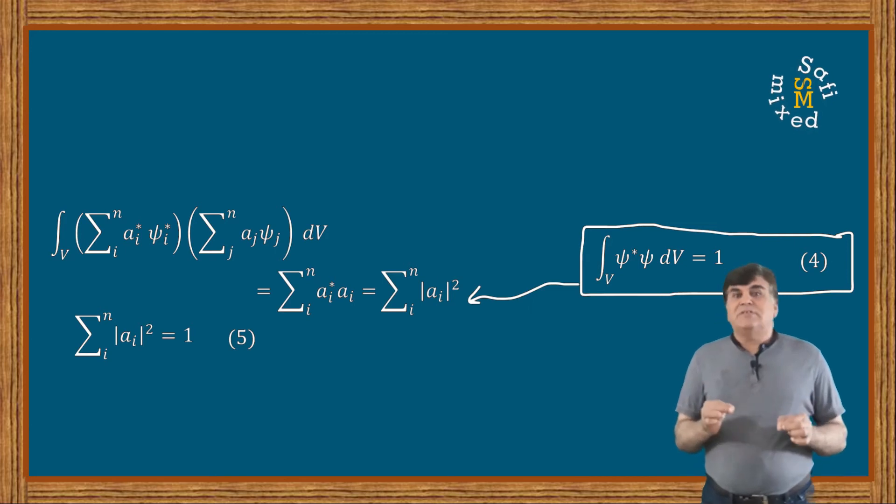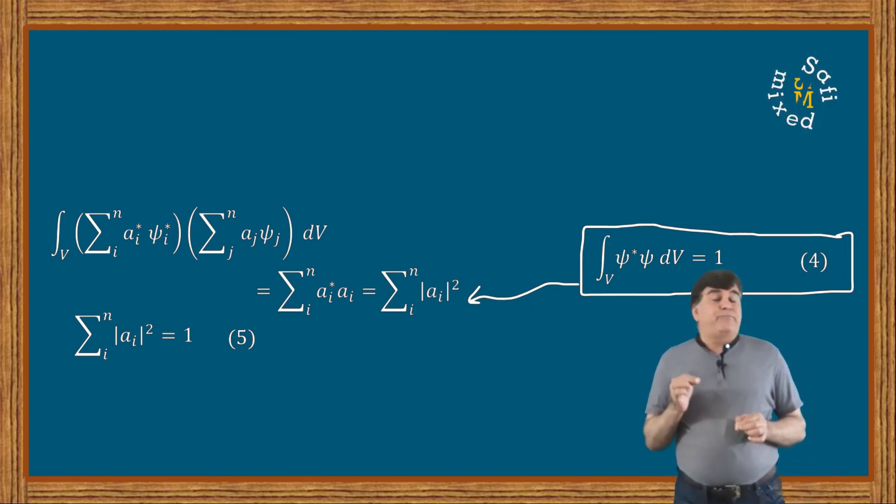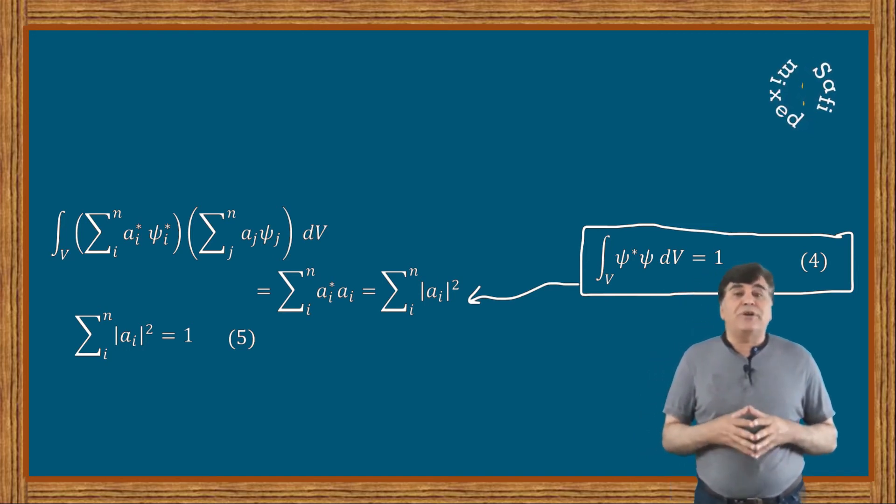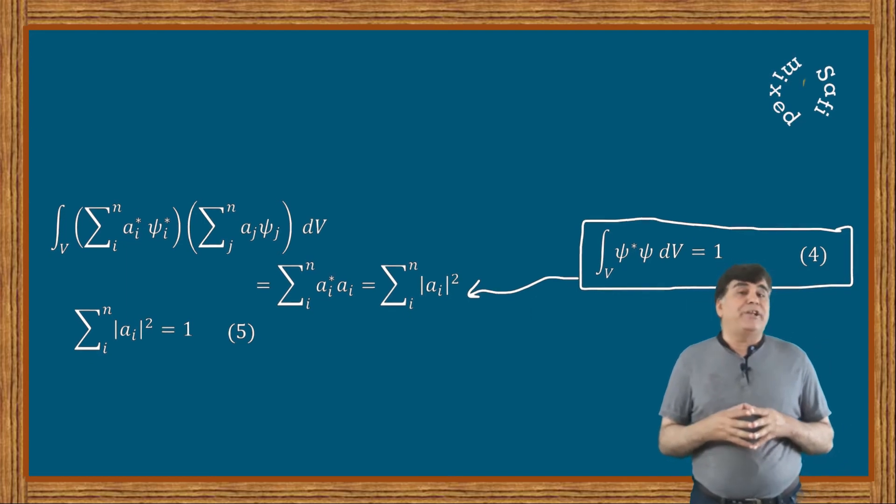This confirms that the square modulus of probability amplitude gives the probability of the system to be in that particular eigenstate of an operator.